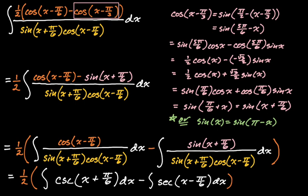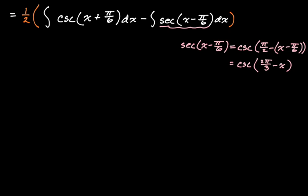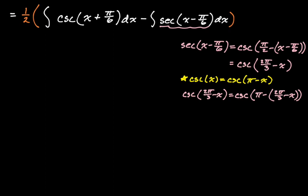We are almost done with this — you start to feel like you're getting somewhere. I don't want to deal with secant, mainly because I know what I want to do with cosecant. So I'm going to change this secant into cosecant using the co-function identity: it becomes the cosecant of pi over two minus the quantity x minus pi over six, which is the cosecant of two pi over three minus x. That makes me feel like I'm getting nowhere. But I'll use the identity that cosecant of x equals the cosecant of pi minus x. So the cosecant of two pi over three minus x is the cosecant of x plus pi over three.